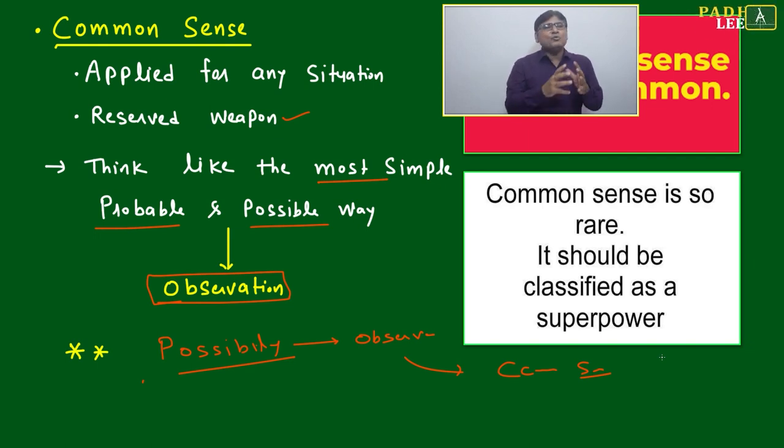I am telling you, think like the most probable and possible way. That is common sense. What are the most possible things that can happen? If you don't know anything about any question, the sky is not going to fall. You think in a simple way, what possibilities are there? Maybe one of the possibility will work. This comes from observation and common sense.